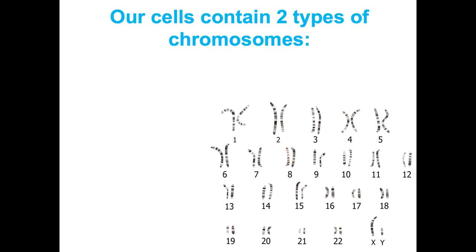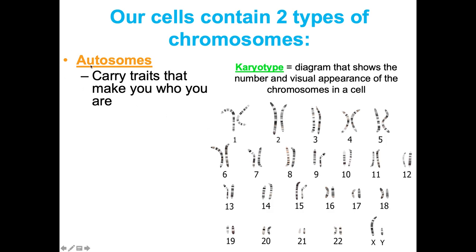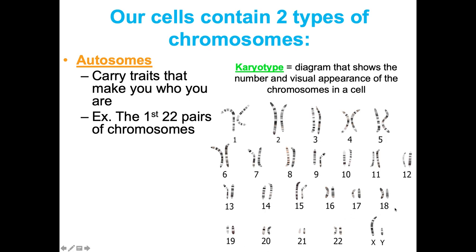Within your cells, there are two types of chromosomes. A karyotype is a diagram that shows the number and the visual appearance of the chromosomes in a cell — and this is a karyotype right here. Some of your chromosomes, the majority, are autosomes. Auto means self, so these are carrying the traits that make you yourself. These are the first 22 pairs of chromosomes in a human — all chromosomes labeled 1 through 22 are your autosomes.